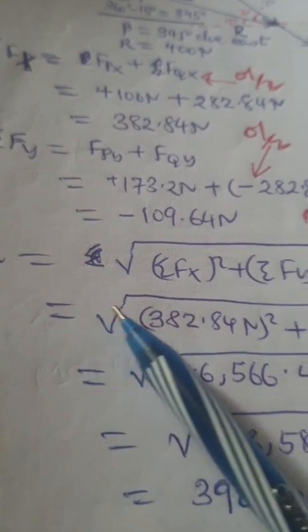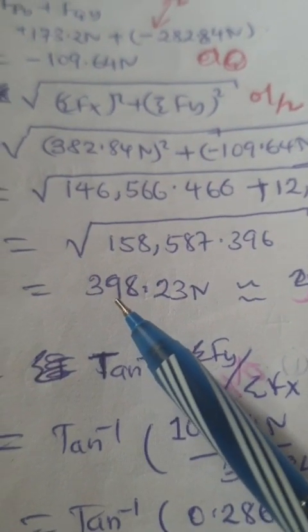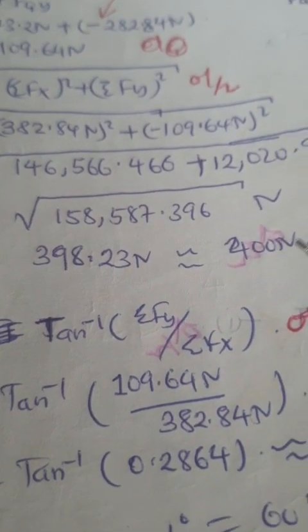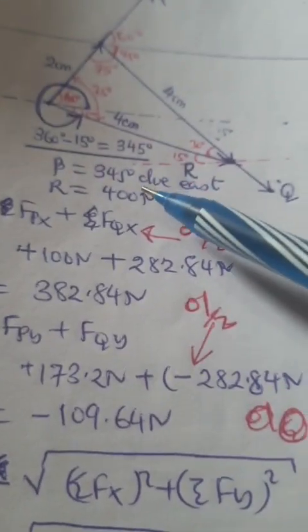We find the resultant using the Pythagorean theorem. We have 398.23 newtons, approximately 400, that's from the graphical method.